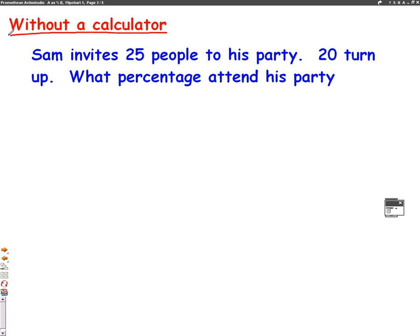So, firstly, we need to start the same way with a fraction. Well, 20 people go to his party out of 25. So we write the fraction as 20 out of 25. The only thing this time is I can't times it by 100 because we haven't got a calculator. So it's a little bit too hard. So we need a different method.